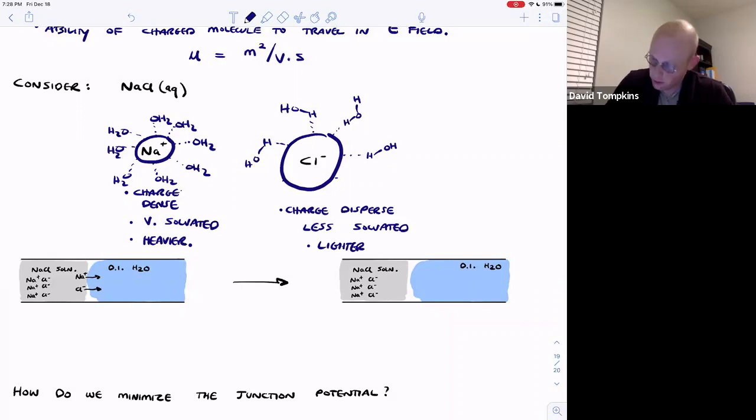And therefore chloride will have a higher mobility or it will travel through solution at a higher velocity depending upon the electric field. And the sodium will have a lower mobility as it drags more water molecules along with it as it travels.